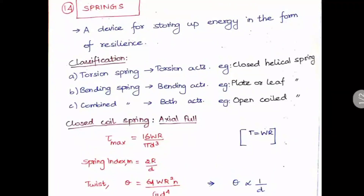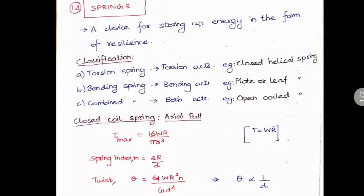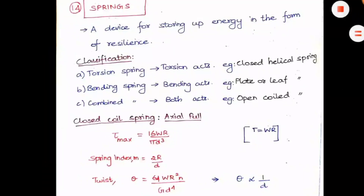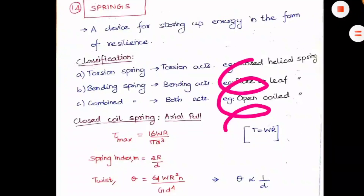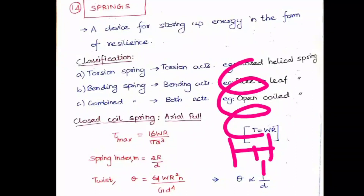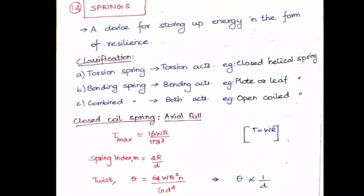The spring index is denoted as M, which is equal to 2R/D, where R is the radius of the coil and D is the diameter of the circular wire or rod which is twisted to form the spring. The distance R refers to the coil radius, while D refers to the wire diameter — that is the difference between R and D.